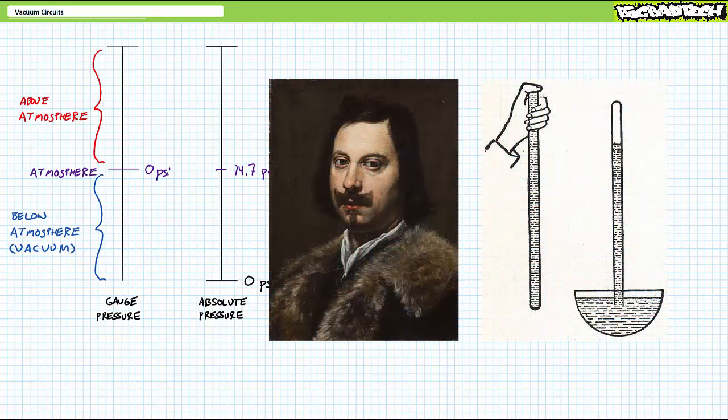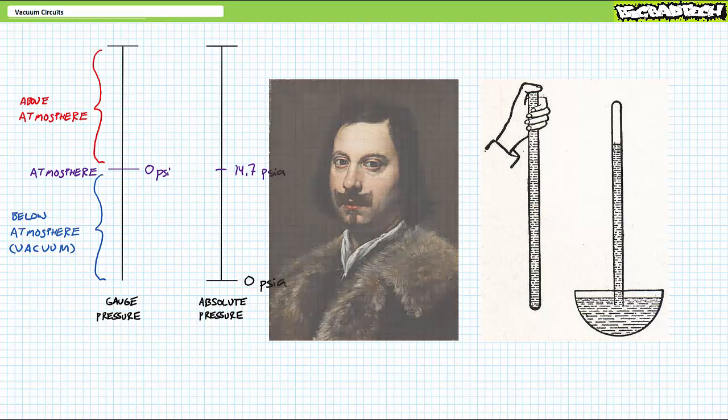Way back when people still wore powdered wigs and tights, some scientists by the name of Torricelli thought it'd be cool to fill a glass tube with a poisonous liquid metal mercury known in those days as quicksilver or hydrogirum, hence the symbol HG, and invert it in a bowl. He found that at atmospheric conditions, i.e. 14.7 psi absolute or 0 psi gauge, the atmosphere exerted enough force in the pool of mercury to push it roughly 30 inches high in the tube, 29.92 inches to be exact.